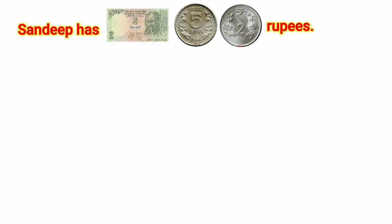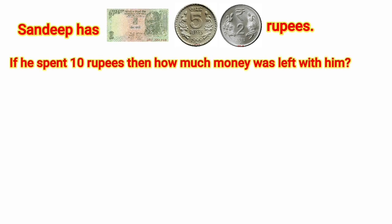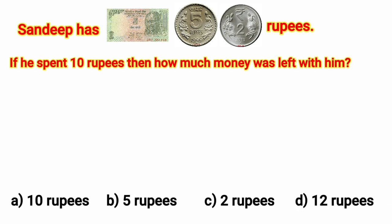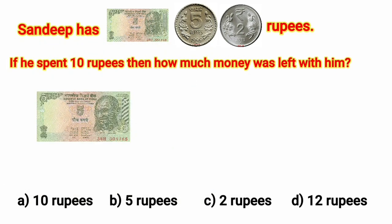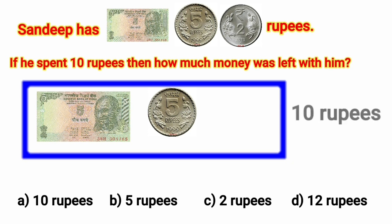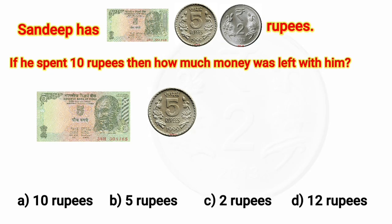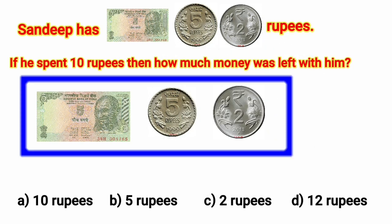Here is the 4th question. Sandeep has some money as shown here. If he spent rupees 10, then how much money was left with him? Let's count the money Sandeep has. 1 note of rupees 5 and 1 coin of rupees 5 together make rupees 10. And 1 more coin of rupees 2 — we will have 10 plus 2 is equal to rupees 12. Sandeep has 12 rupees.